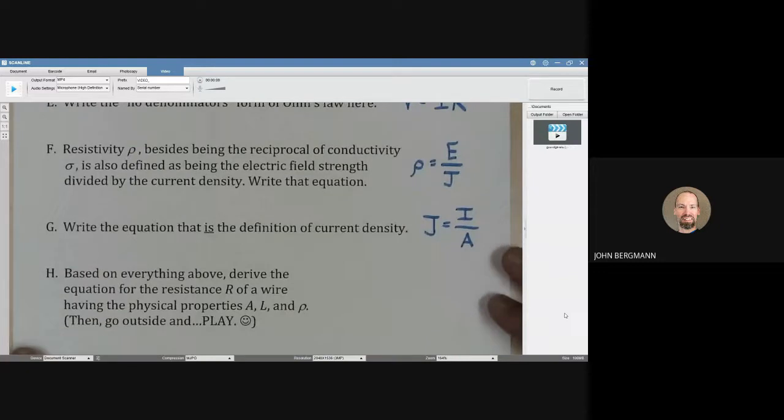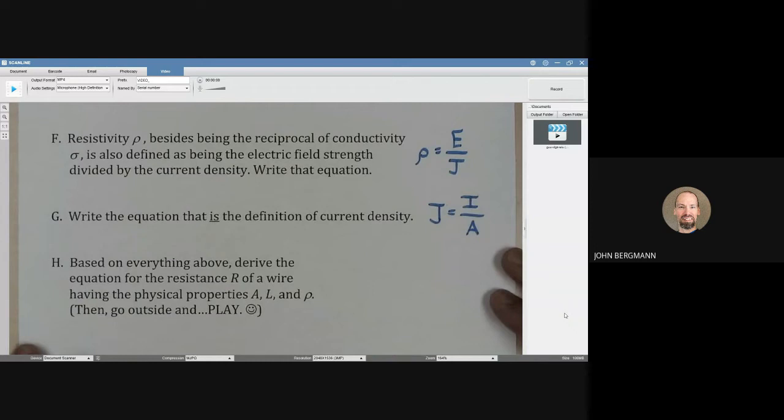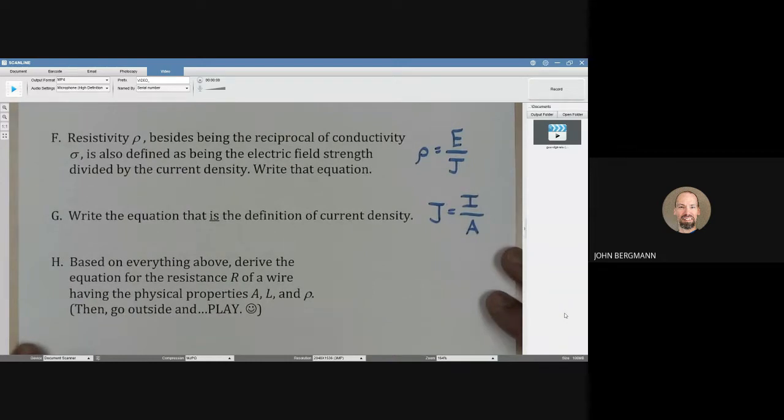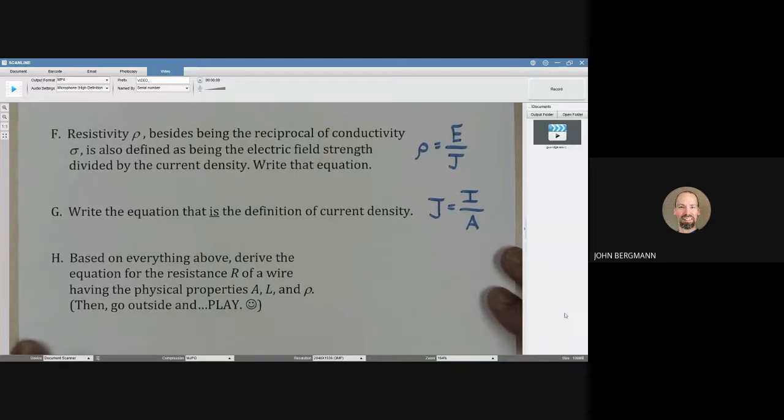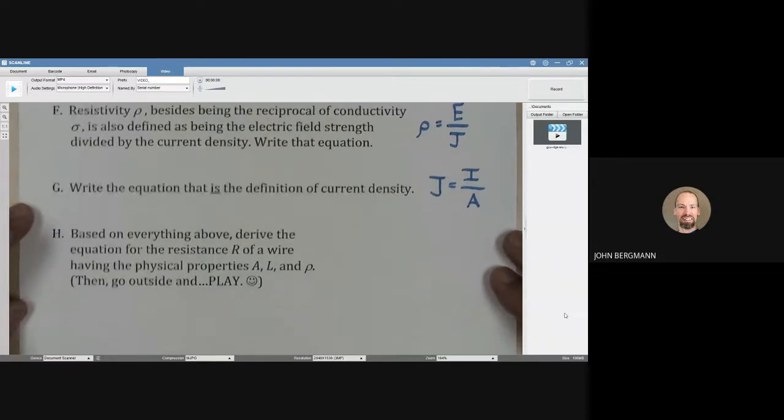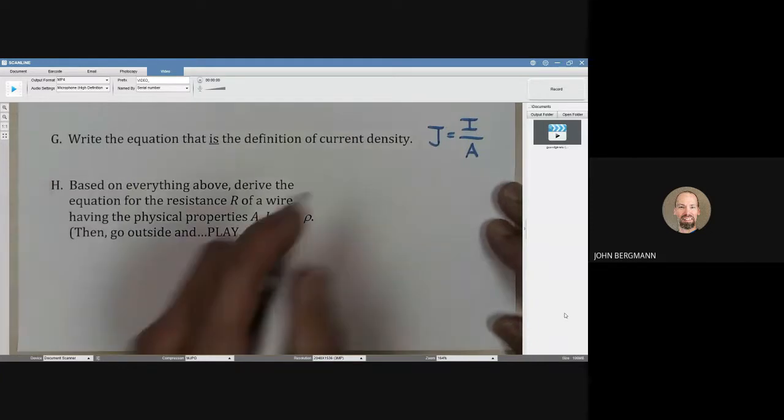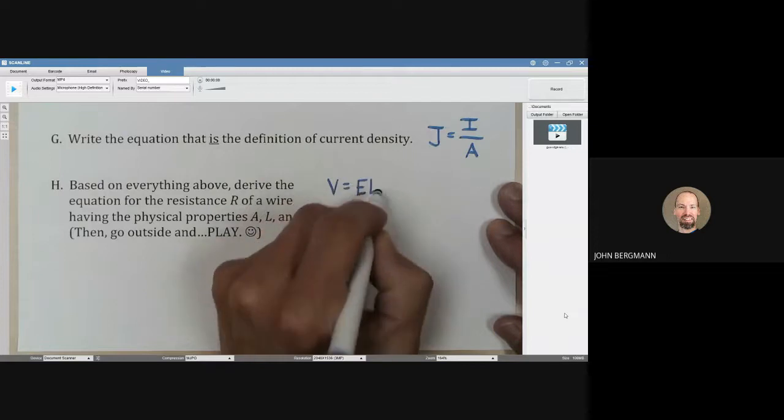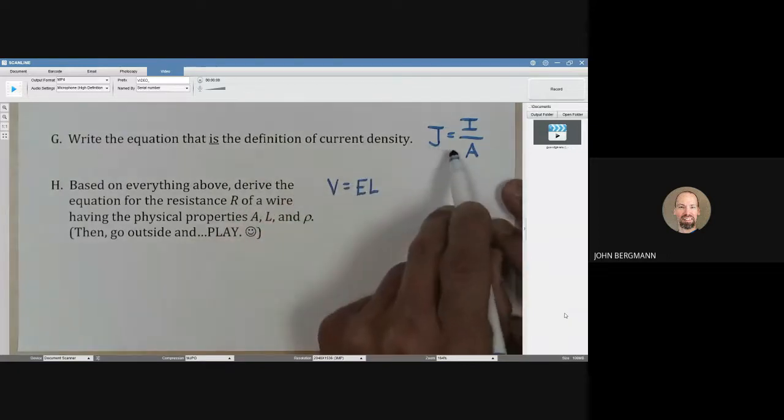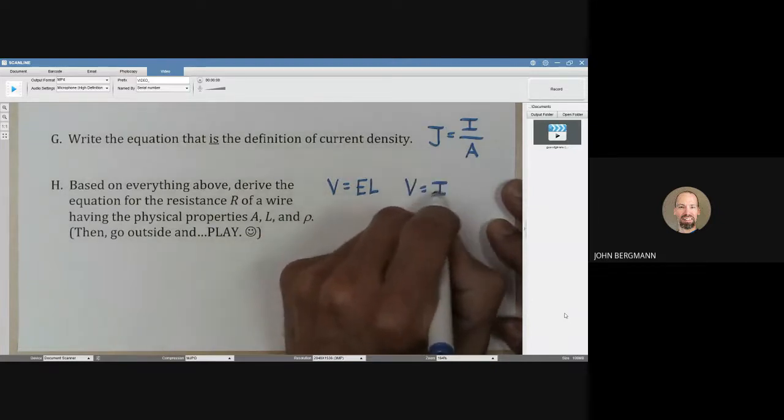Based on everything above, derive the equation for the resistance R of a wire having the physical properties A, L, and rho, and then go outside and play. Let's recopy what we have here in this space. From the previous page, we have V is equal to E times L. There is J is equal to I divided by A. And then we also had V is equal to I times R.